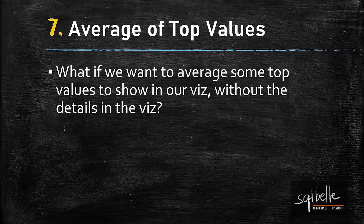In this next example, we will look at some top values and get the average of these top values so we can display it in our viz. The challenge in this use case is that the chart we are using does not have the detail we need with our calculation. We are going to be using a map that shows only state values, but what we want to calculate requires customer ID, which we do not want to show in our charts.